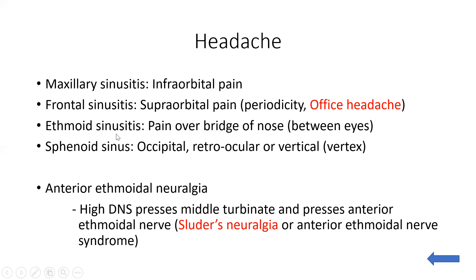If ethmoidal sinuses are involved, the pain will be over the bridge of the nose, that is between the eyes. In sphenoid sinus involvement, the pain is located posteriorly in the occipital or vertex region, and sometimes felt behind the eyes in the retroocular region. Another cause of headache from nose pathology is high DNS, which presses the middle turbinate and the anterior ethmoidal nerve, causing pain in the orbital region and near the nose — this is called Sluder's neuralgia, or anterior ethmoidal nerve syndrome.